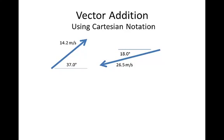In this lesson we're going to use Cartesian notation to add two vectors together. First we'll get the two vectors into their Cartesian form, then we'll add them together, and then we'll get the resultant in both Cartesian form and in polar form.